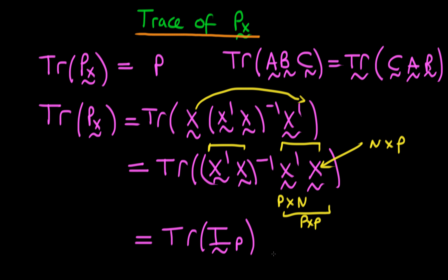And the trace of an identity matrix of size p by p is just going to be p because we've just got p ones along the diagonal.